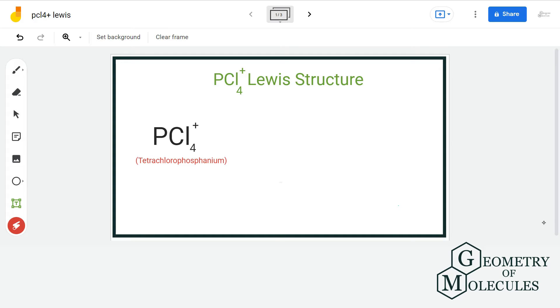It's a chemical formula of tetrachlorophosphenium ion and to find out its Lewis structure, we are first going to find out the total number of valence electrons. We have 1 phosphorus atom having 5 valence electrons, 4 chlorine atoms having 7 valence electrons and this positive charge here represents loss of 1 electron. Now that gives us a total of 32 valence electrons.